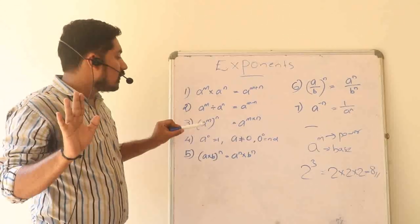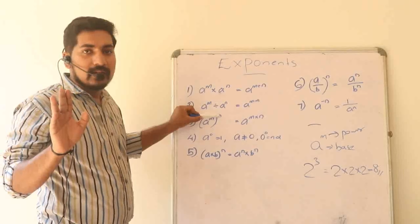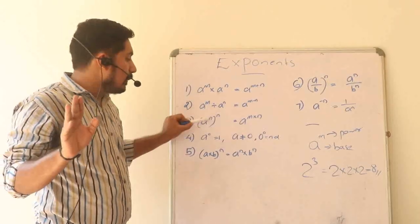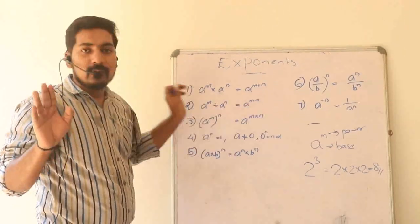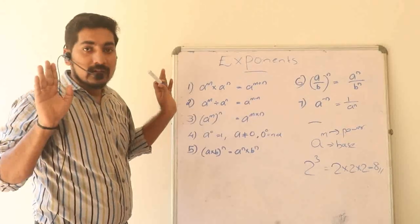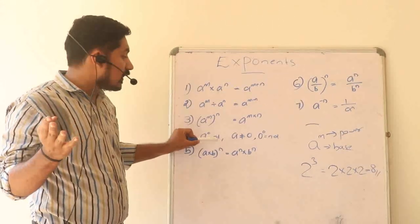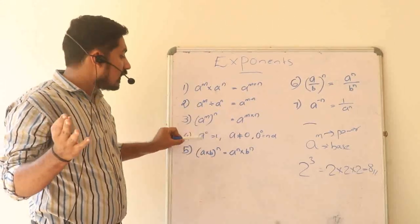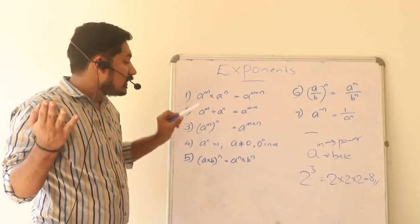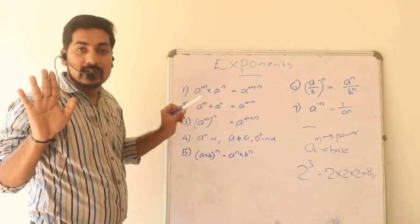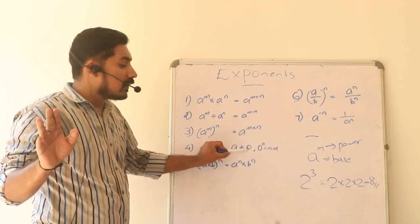Rule 3: a raised to m, all raised to n, equals a raised to m into n. Rule 4: a raised to 0 equals 1. When your power is 0, the answer is 1. Condition: a raised to 0 is defined only when a is not 0.